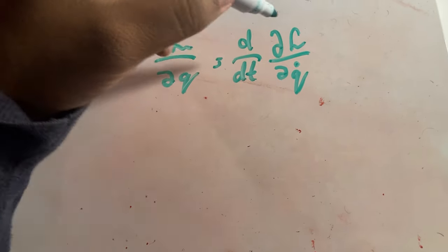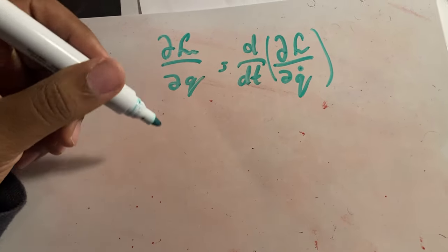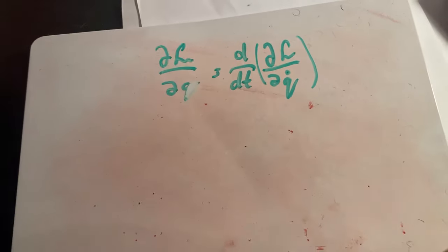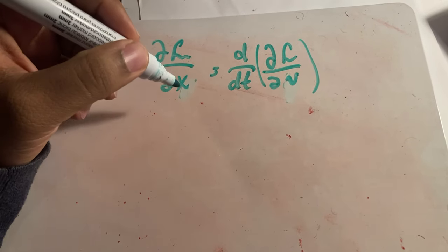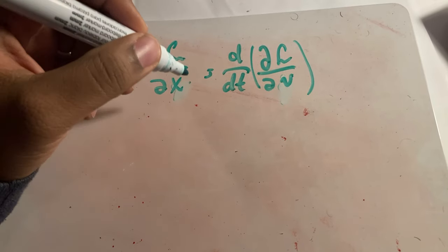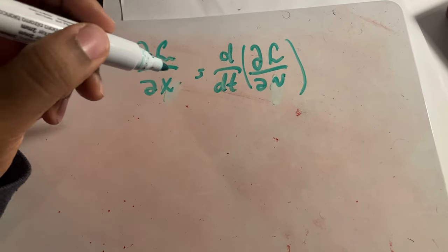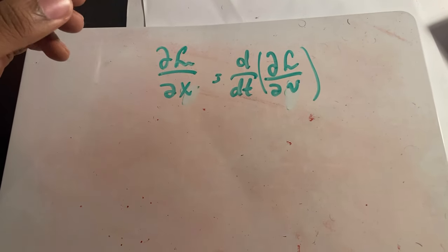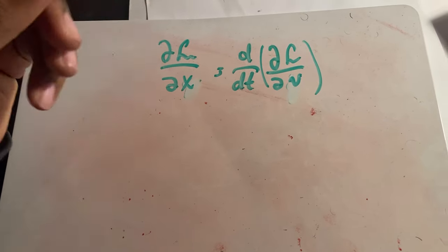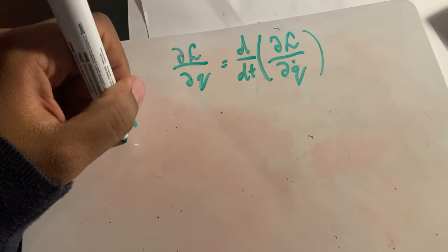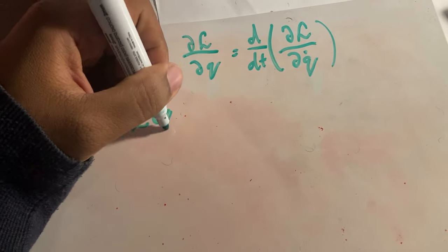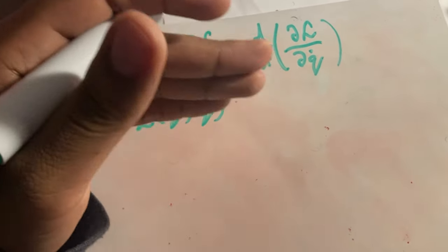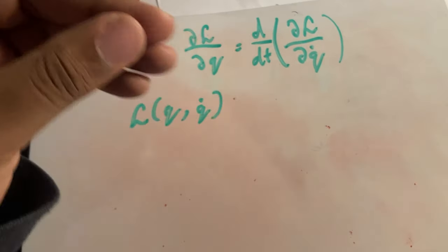Instead of calling the coordinate x, I use q and q-dot, indicating I'm free to choose whatever coordinates I'm interested in. These are called generalized or canonical coordinates for position and velocity. The Lagrangian is a functional dependent on q and q-dot. I mention it's a functional because it depends on functions, but that nuance isn't critical here.